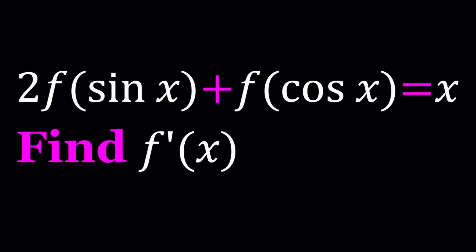Hello everyone, in this video we're going to be solving a problem with derivatives. We have 2 times f of sine x plus f of cosine x equals x, and then for this function that satisfies this equation, we're going to find f prime of x.